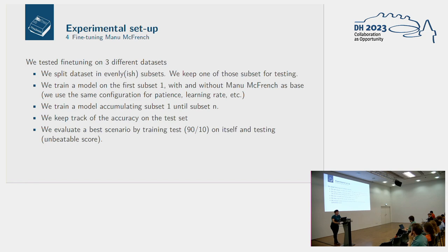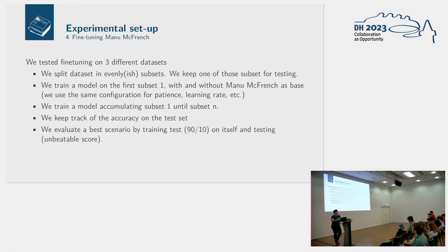Here's the experimental setup. We used three different datasets, split each into different subsets to run experiments on data quantity, and fine-tuned Manumac French on progressively larger subsets, measuring accuracy metrics each time. We evaluated two things: speed and accuracy — how fast we can reach a good CER, and what level of CER we can ultimately reach. We also created a baseline by using 90% of the training set as the test set as well, essentially asking the model to recite what it learned during training, giving us an unbeatable ceiling score.